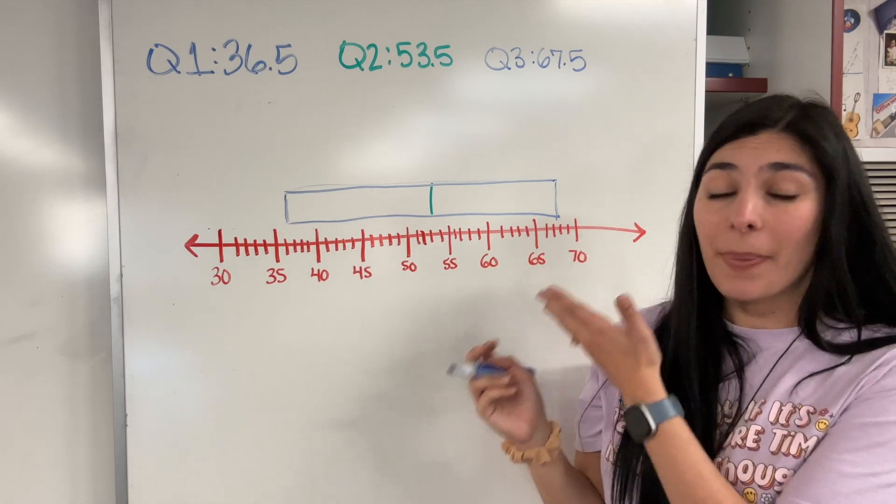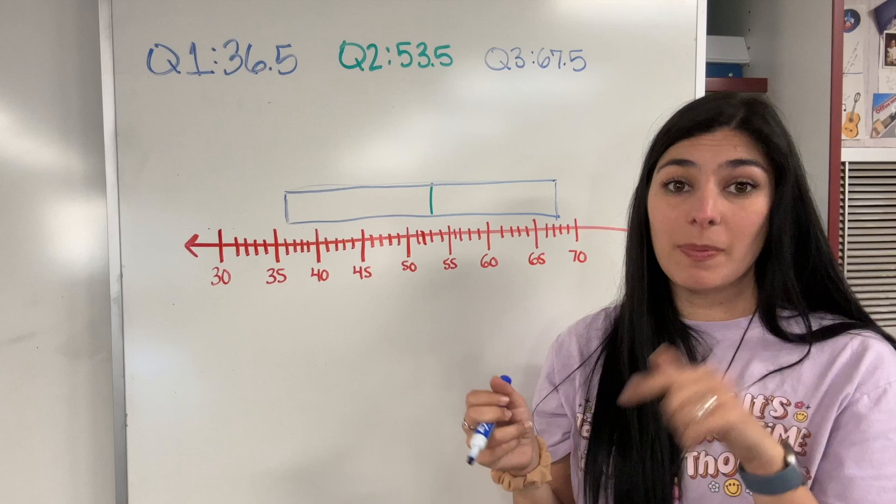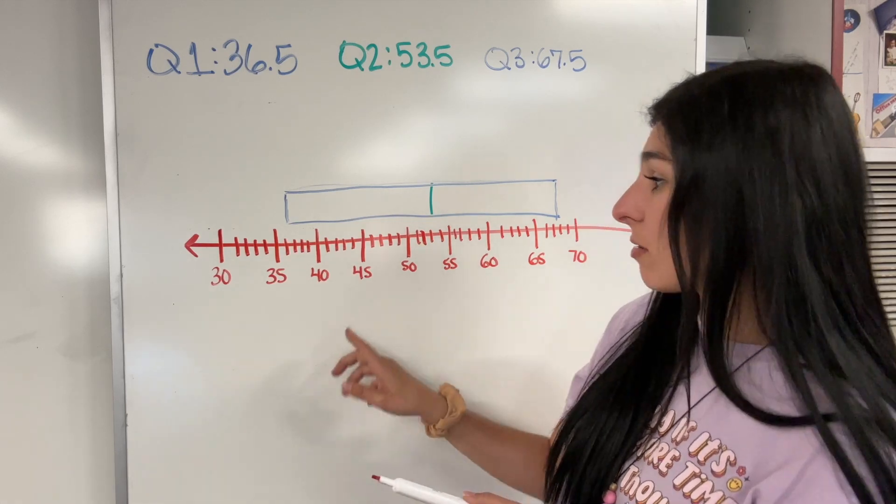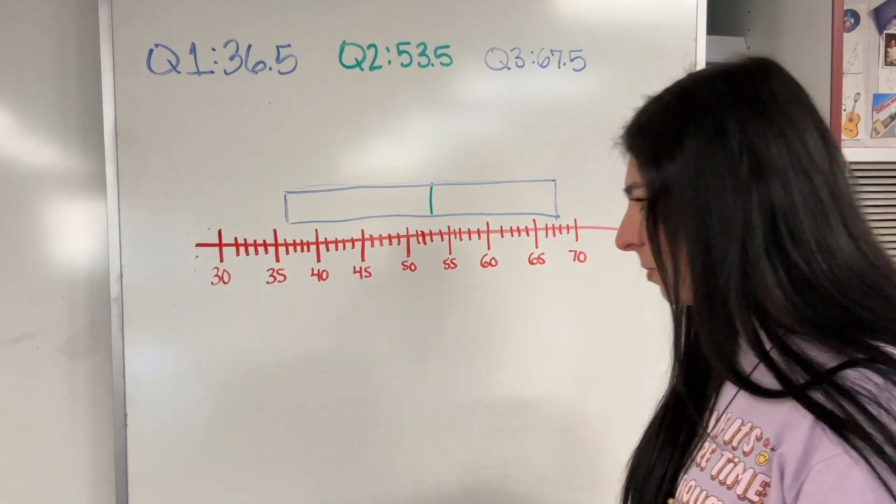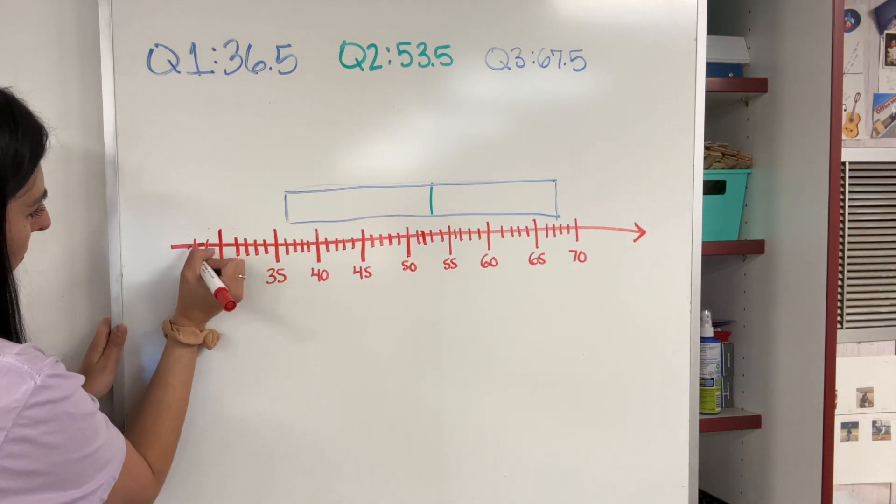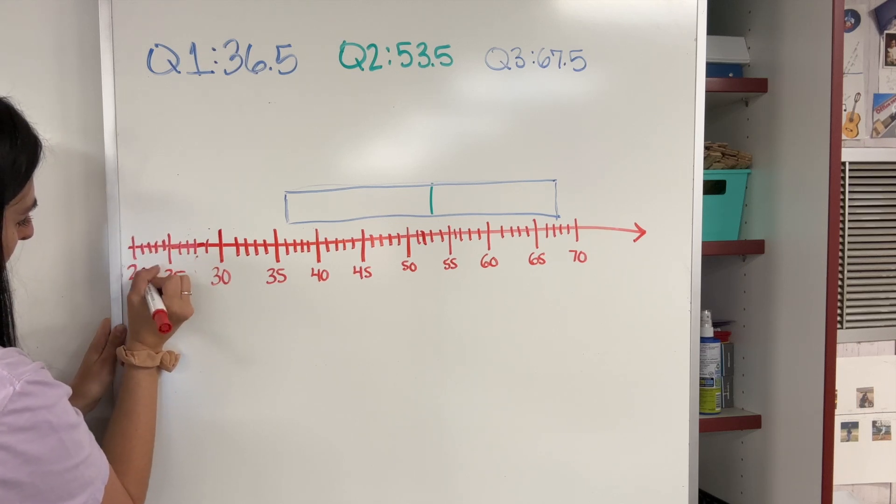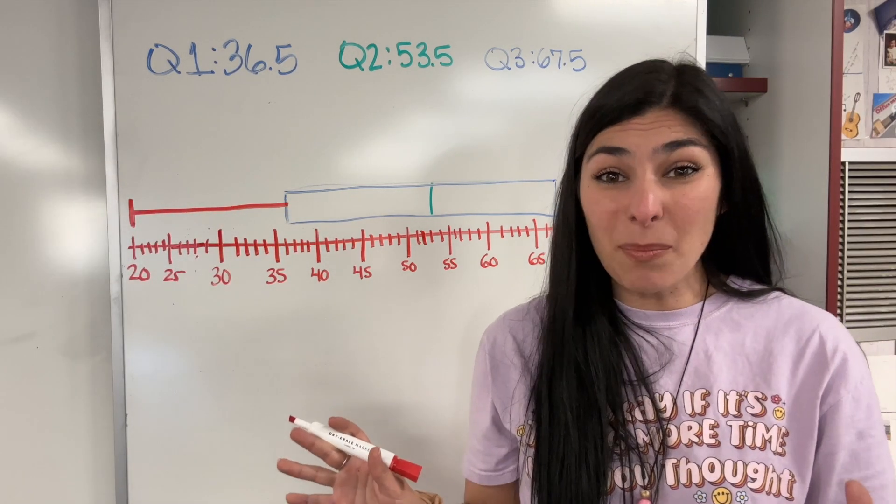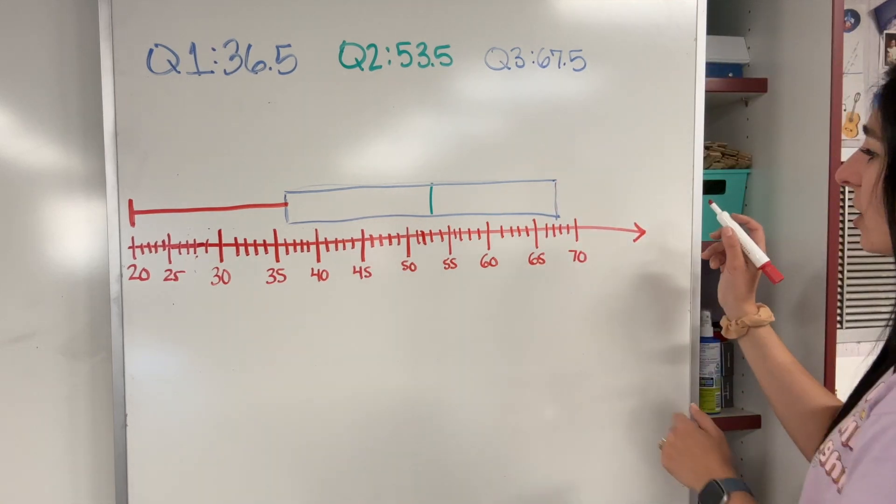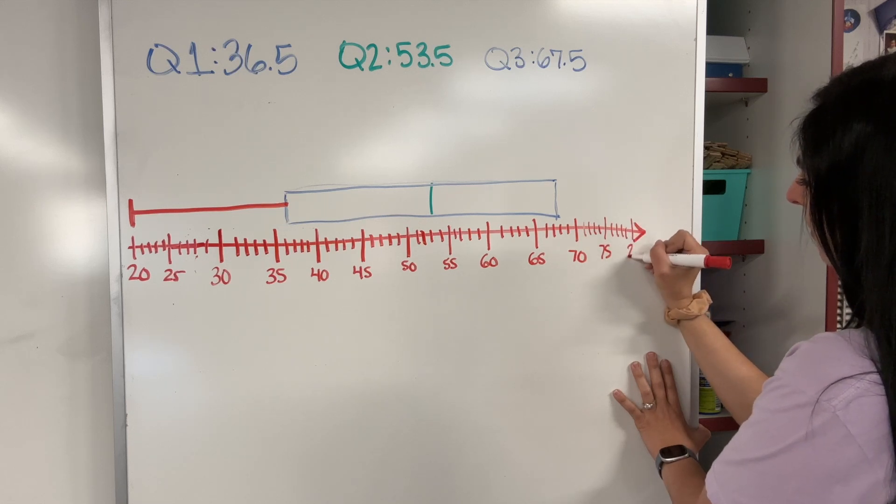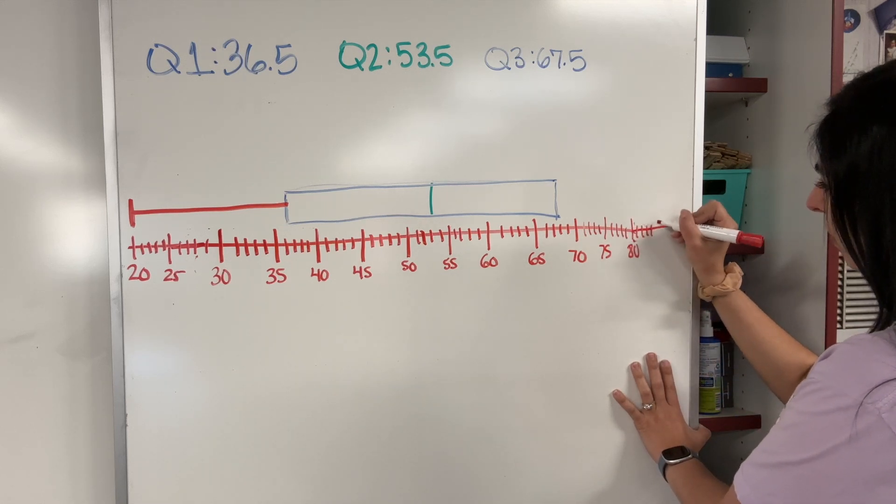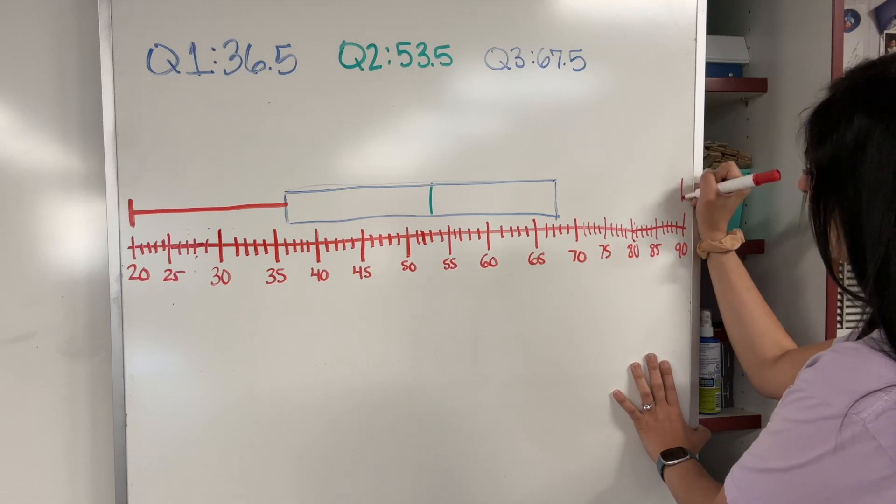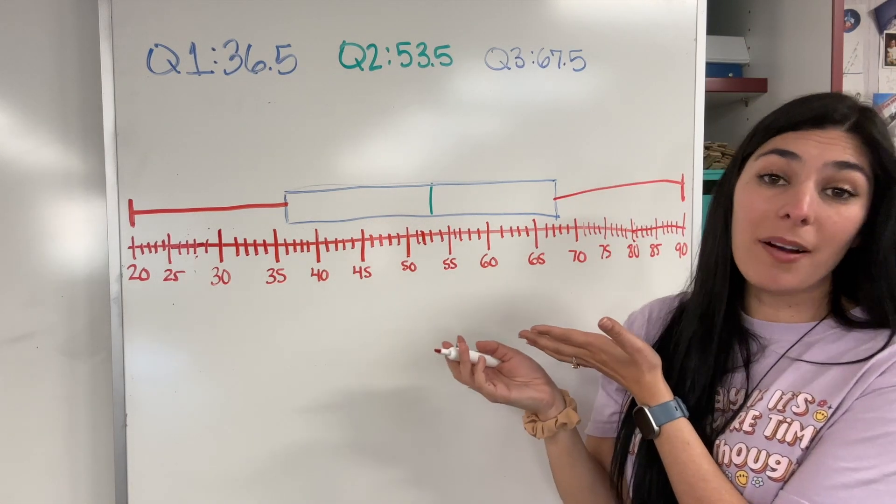Here's our box plot, but I'm missing one thing, which is our whiskers. Our whiskers are going to be the highest and lowest number out of our data. If I look back at our data, the smallest number is 20, which I need to add to my box plot. 20 is my lowest number. And then my highest number that I had was 89. And that's our box and whisker plot.